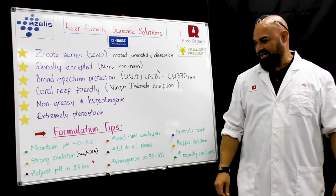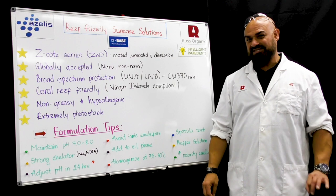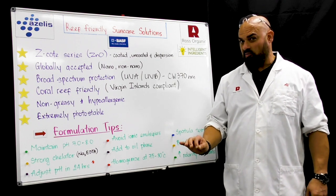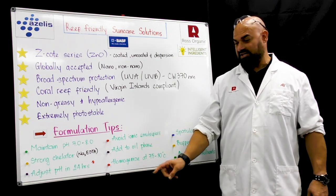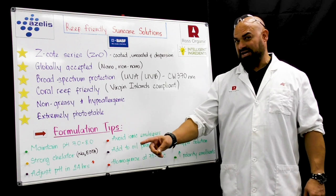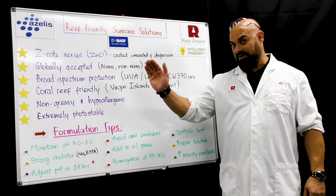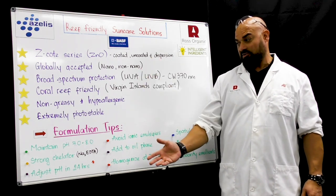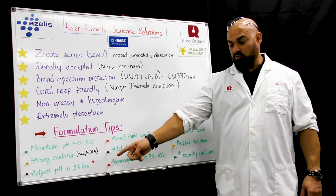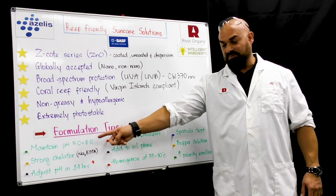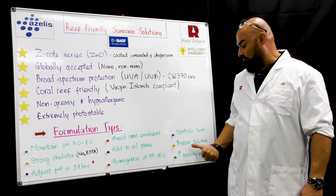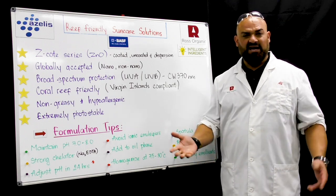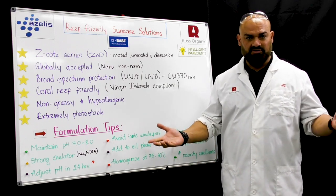I'm going to give you some formulation tips. Maintain the pH between seven and eight. That's very critical because zinc oxide formulations do tend to shift pH overnight. They're going to go probably above eight and close to nine even. So in 24 hours, adjust the pH back to between seven and eight range. We like to use a buffer solution, usually citric acid, sodium citrate will do it.